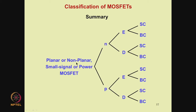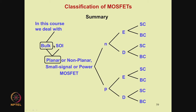Let us summarize the various types of MOSFETs discussed. A MOSFET can be planar or non-planar, small signal or power. Each device could be either N-type or P-type, and each further could be enhancement or depletion type. An enhancement or depletion type device could be either a surface channel or buried channel device. A planar MOSFET could be of the bulk variety or SOI variety. In this course, we are going to deal with bulk MOSFETs, so from now onwards we shall focus on the bulk MOSFET.